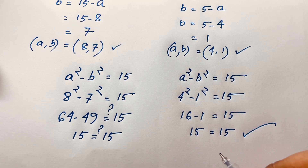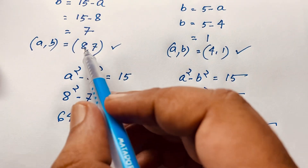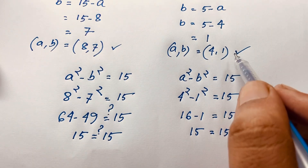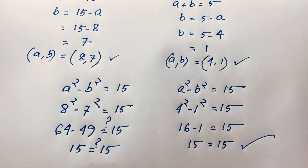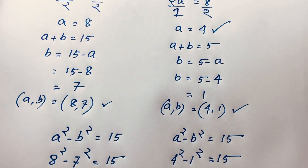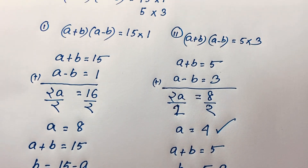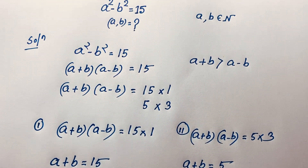So our final answers are (a, b) = (8, 7) and (a, b) = (4, 1). Thank you all. If you enjoyed this video, please subscribe to my channel for other interesting videos. Goodbye, take care!